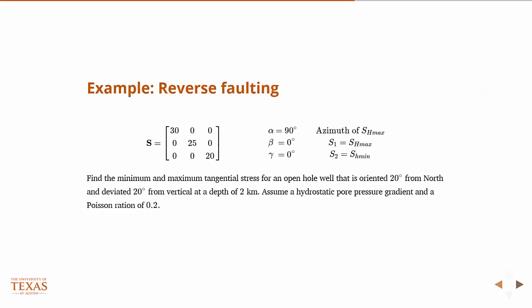So we can work an example. There I'm giving you a stress tensor, a principal stress tensor, so those are the principal stress directions for a reverse faulting scenario. And I'm giving you the three angles, so how this is oriented with respect to the geographic coordinate system. So in this case, since beta and gamma are zero, it's basically just a rotation in the plane, so sh max is 90 degrees from north. That's all it is, just a rotation in the plane. And so then what we want to do is we want to find those minimum and maximum tangential stress for an open-hole well.